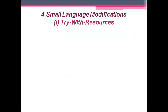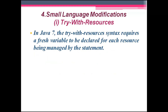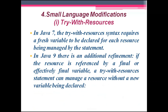The fourth concept of Java 9 is small language modifications. First is try-with-resources, which was launched in Java 7 but has modifications in Java 9. In Java 7, try-with-resources required a fresh variable to be declared for each managed resource. But in Java 9, if the resource is referenced by a final or effectively final value, a try-with-resources statement can manage a resource without a new variable declaration.